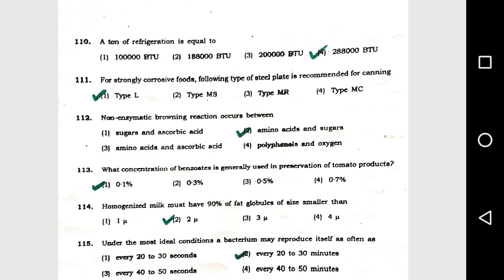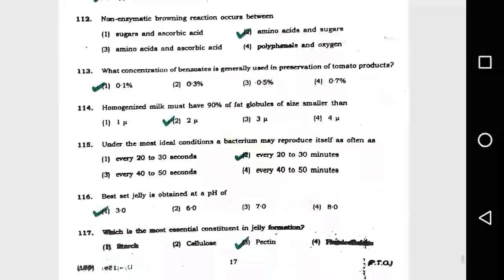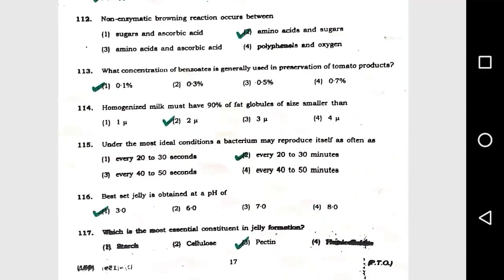Question number 112: Non-enzymatic browning reaction occurs between option 2, amino acids and sugars. Question number 113: What concentration of benzoate is generally used as a preservative in tomato products? Option 1, 0.1 percent.